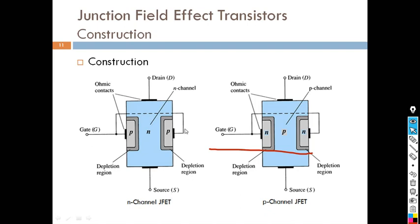In P channel FET, a semiconductor material of P type acts as the channel for current flow, and N type material is added on top to form the junction. Once again it is a three terminal device: drain, source, and gate. This is the architecture view of the junction field effect transistor.